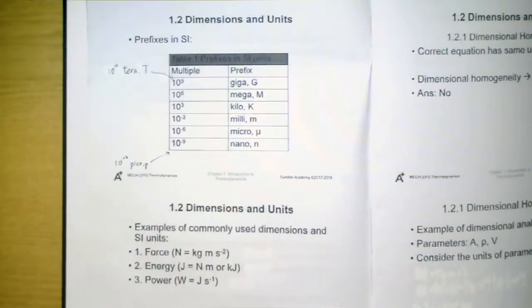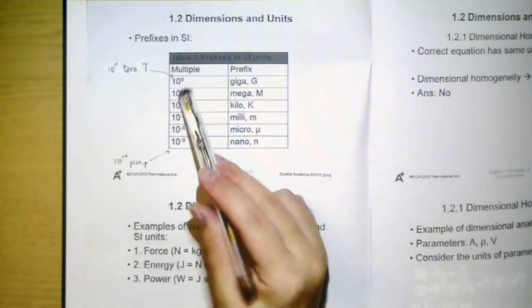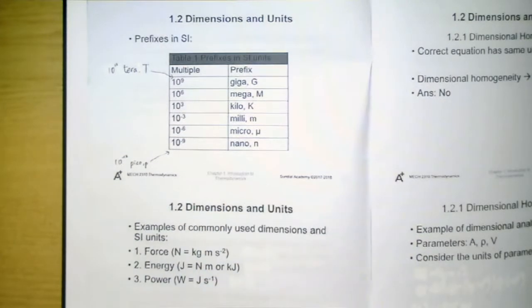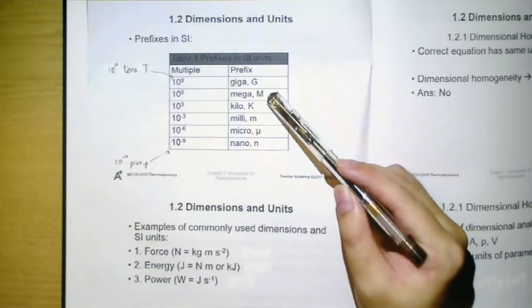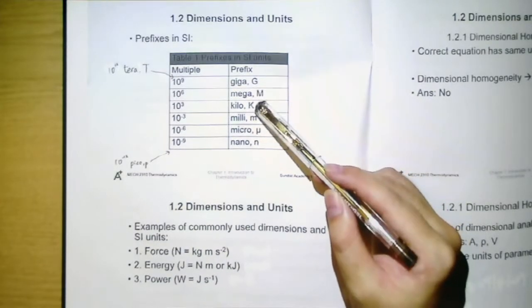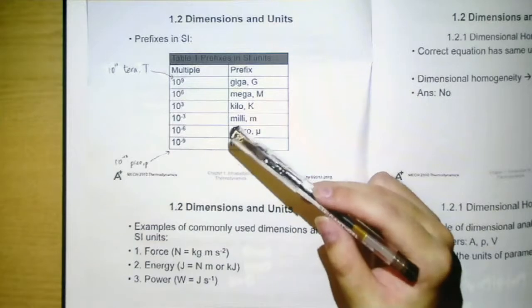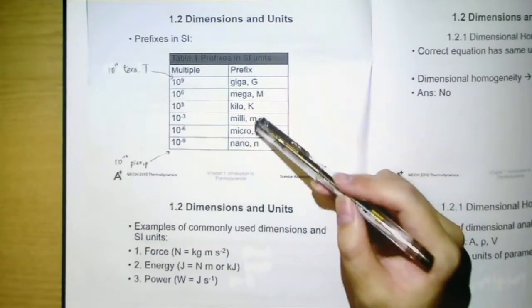Please add it to this table by yourself. And you can also notice that for the index inside this prefix, for example, the 3, 6, 9 here, if it is greater than zero, then the prefixes would be in capital letter. But if the index is negative, then it will be in small letter.